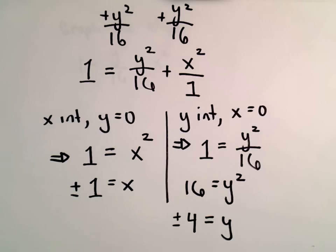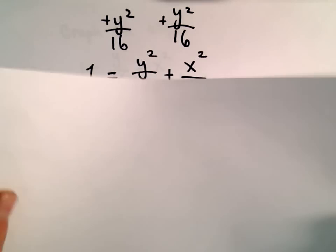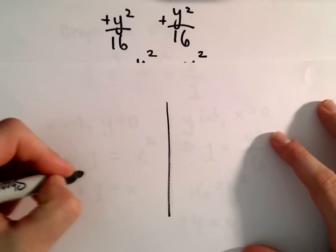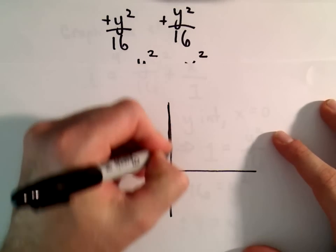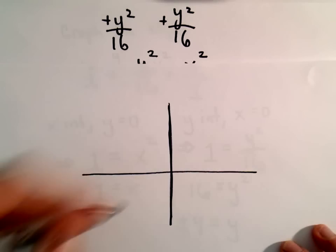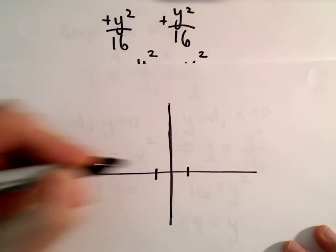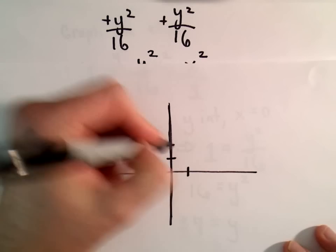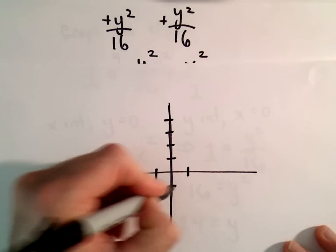Okay, now I think we've got enough to do a decent little sketch. This is going to be an ellipse centered at the origin. We said our x-intercepts were at positive 1 and at negative 1, and the y-intercepts were at positive 4 and at negative 4.